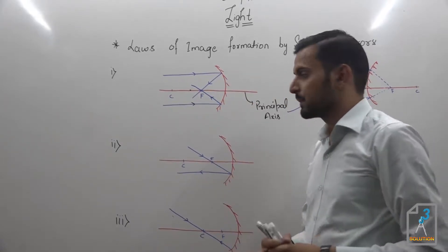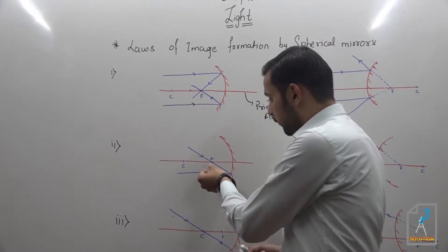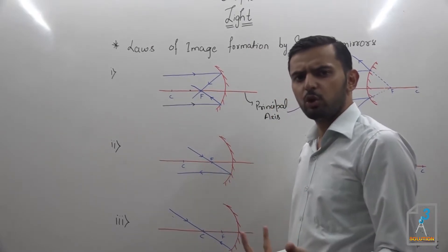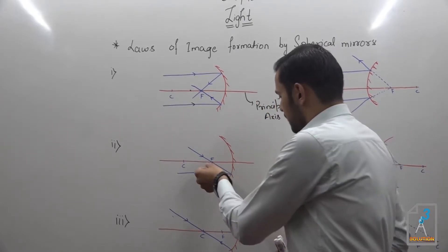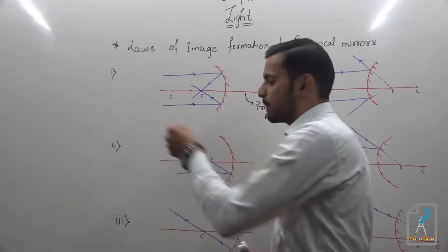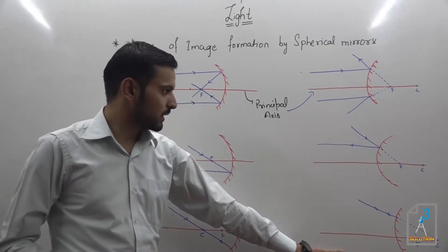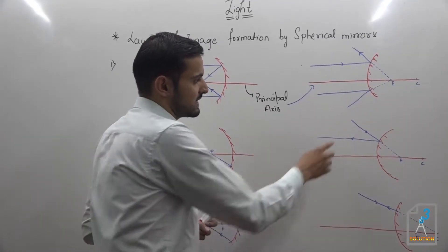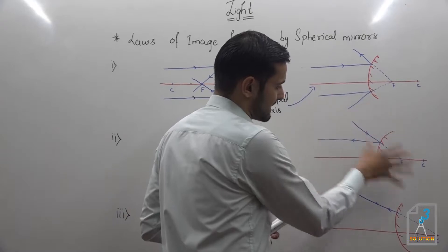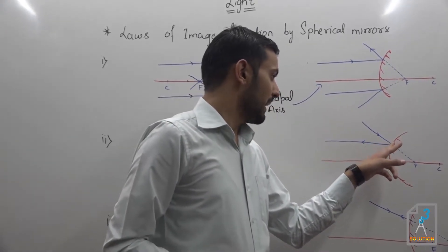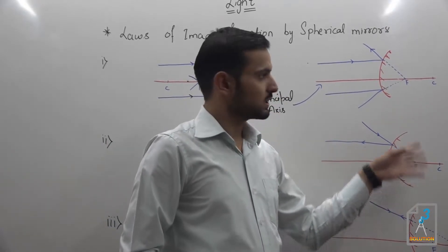Now what if I make light incident through the focus? It will just follow the reverse path — after cutting the principal axis at the focus, after reflection it goes parallel to the principal axis. In the same way for a convex mirror, if I make light incident toward the imaginary focus, after reflection it will just pass parallel to the principal axis.